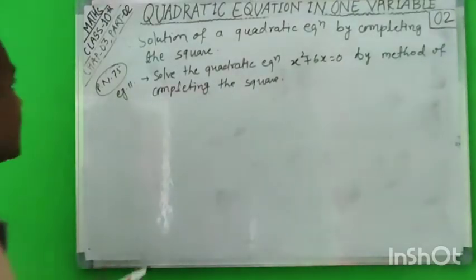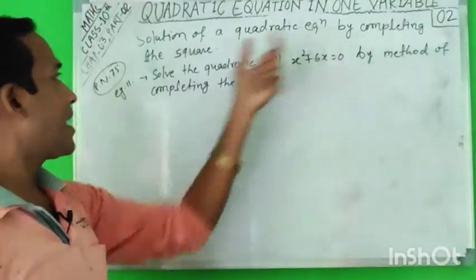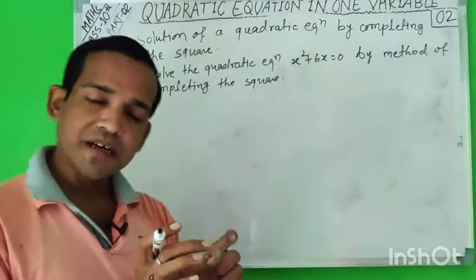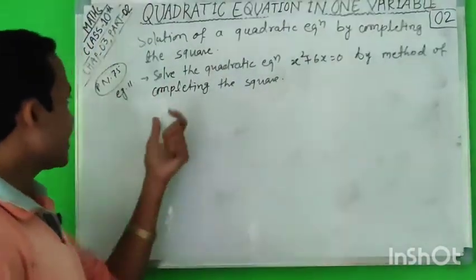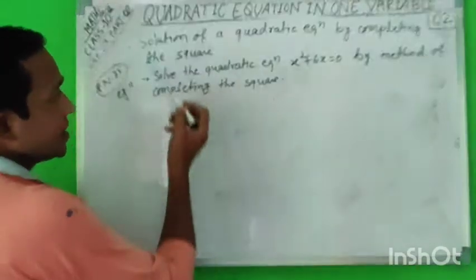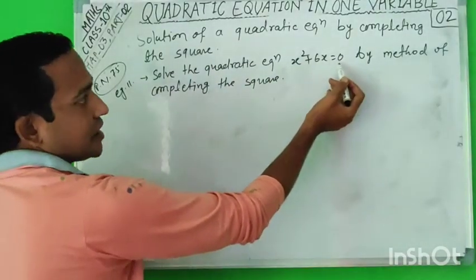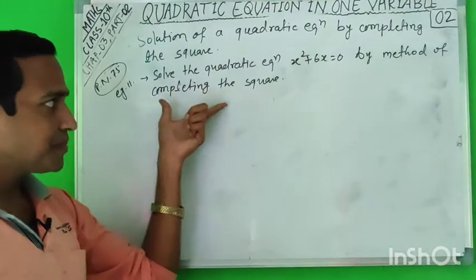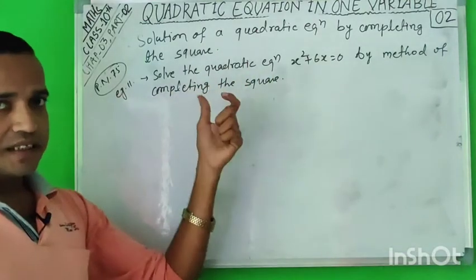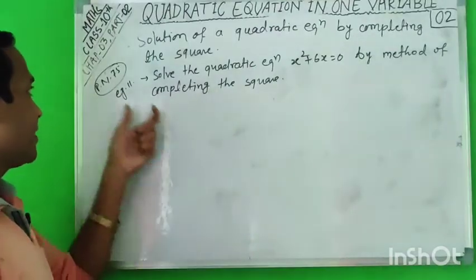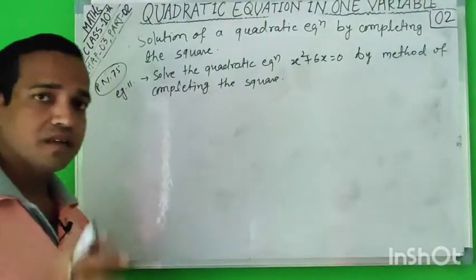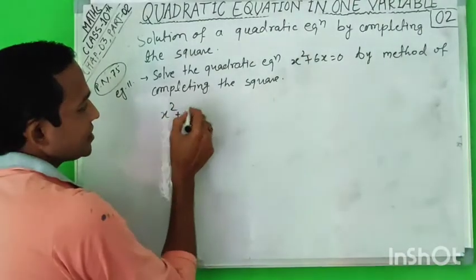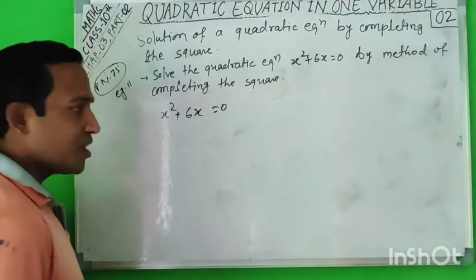Now the next topic is solving a quadratic equation by completing the square. We need to find the solution of a quadratic equation by completing the square method. Let's take an example: solve x² + 6x = 0 by the method of completing the square. When the question specifically says 'by the method of completing the square,' you must use this particular method. This is example 11 from page 75 of your book.